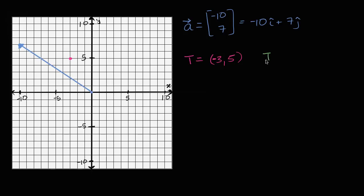Let's say the initial point i is equal to (x_i, y_i) — that is, x initial and y initial. How do we go from having an initial point and a terminal point to getting the components of the vector? The x component of the vector is your change in x going from the initial to the terminal point, and the y component is your change in y going from the initial point to the terminal point.